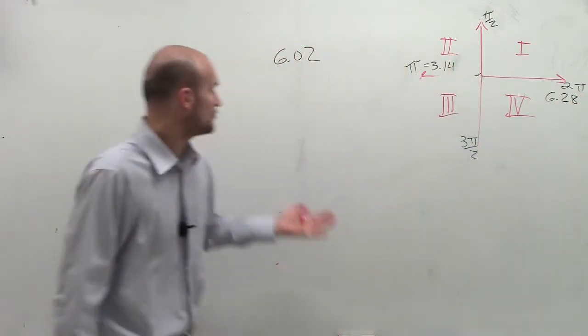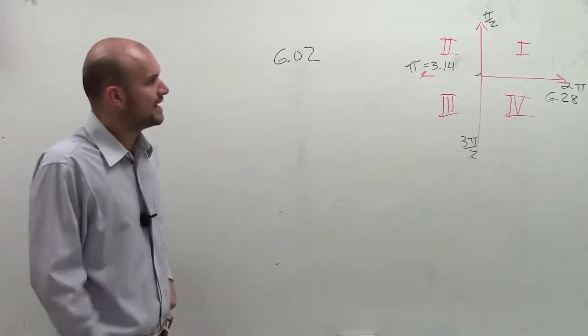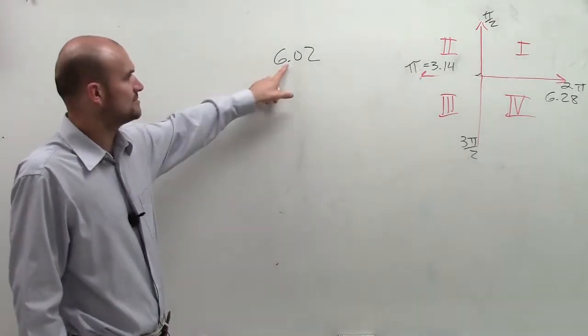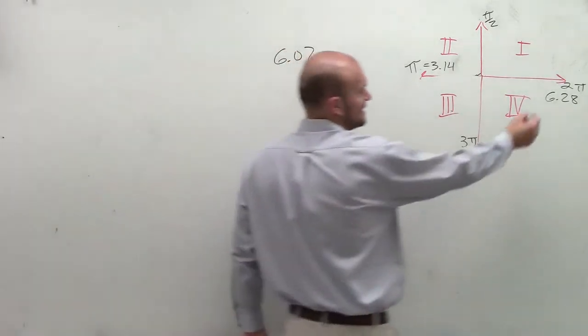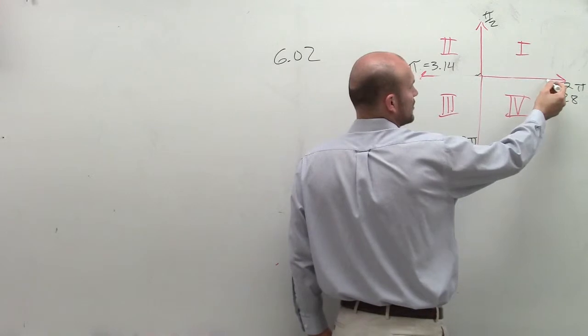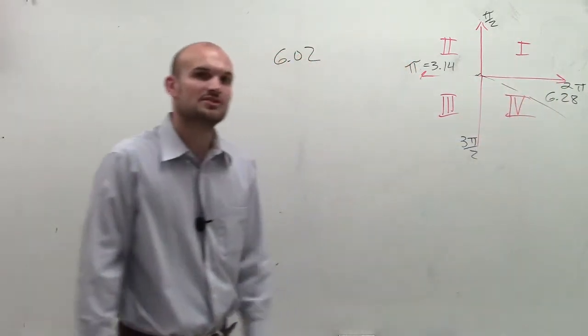Because we notice our radian is not in terms of pi. So if I want to look at the distance of this angle in terms of radians at 6.02, you can obviously see it's just going to be shy of this axis. So it's going to be somewhere right around there, telling us that it's going to be in the fourth quadrant.